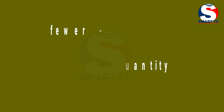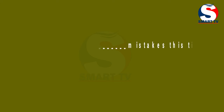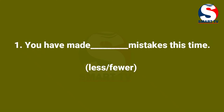Now in the sentence 'You have made dash mistakes this time', the right answer is 'fewer'. You have made fewer mistakes this time. Remember: we use 'fewer' when we have a countable noun. Whenever you have two numbers, we can use 'fewer'; if you have uncountable nouns, use 'less'.